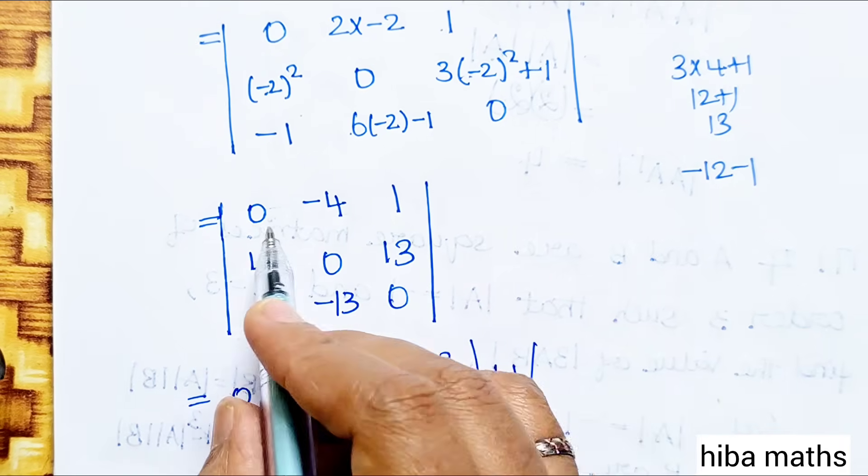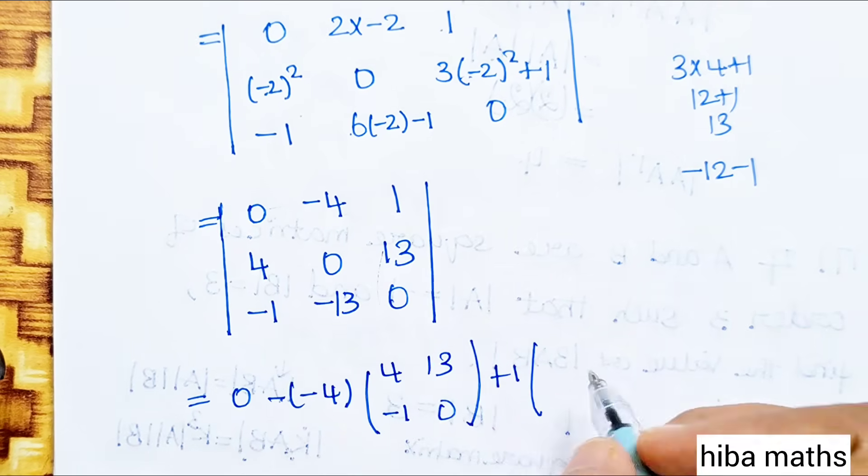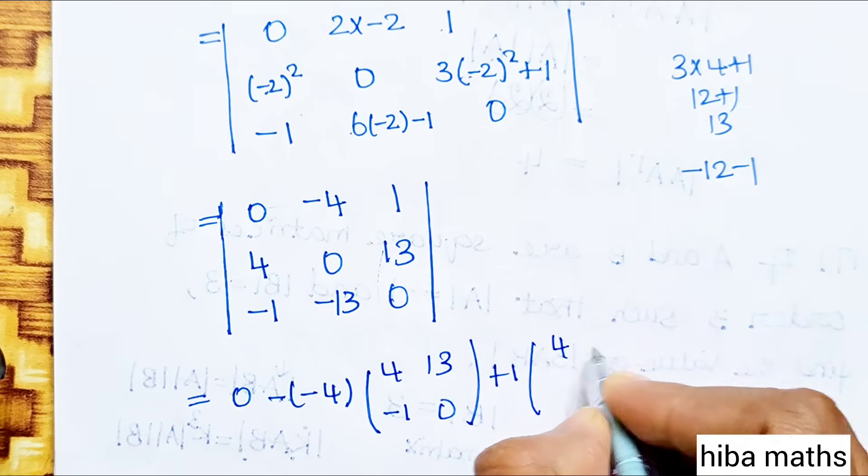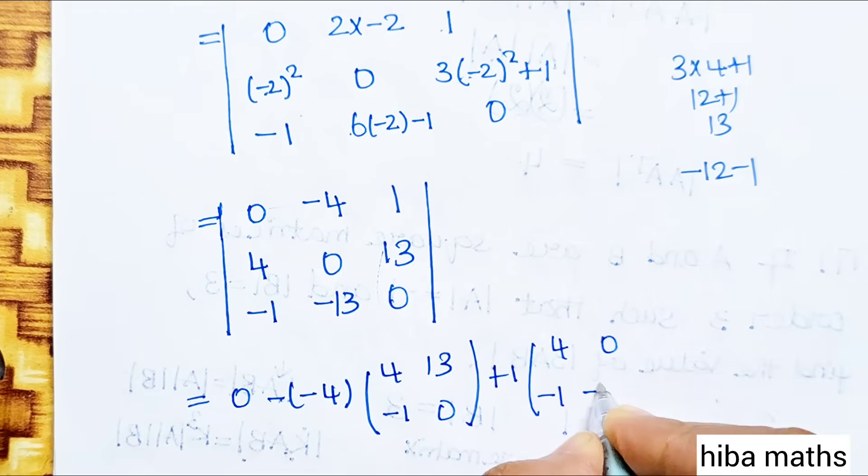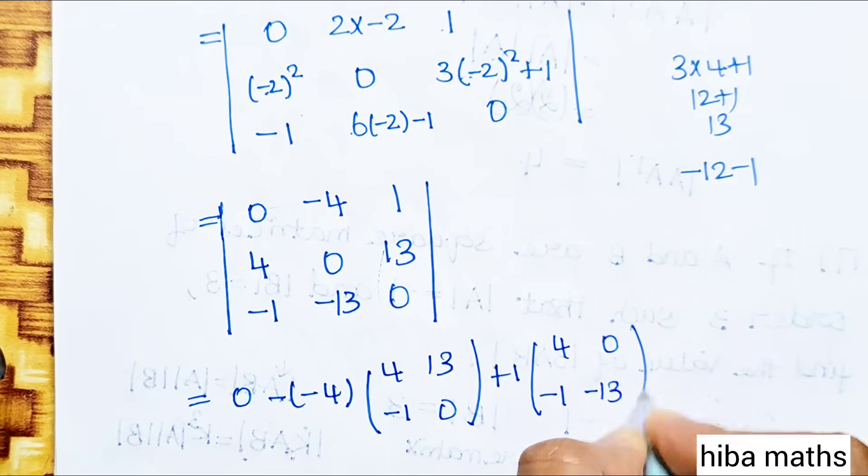Plus 1 into the first row last column minor, which uses entries 4, 0, −1, −13. So we have: 0 − (−4)×(4×0 − 13×(−1)) + 1×(4×(−13) − 0×(−1)).